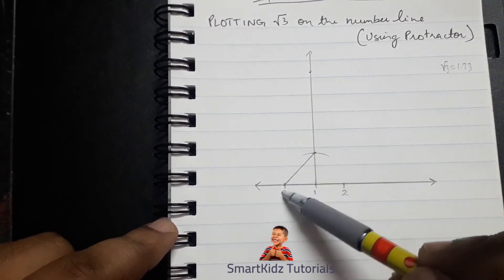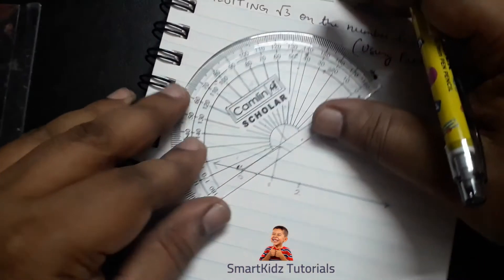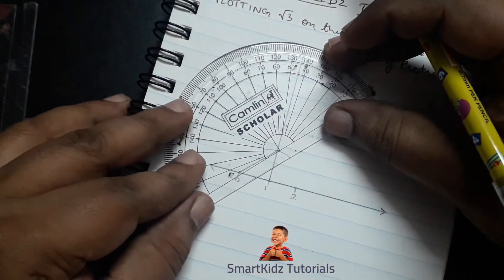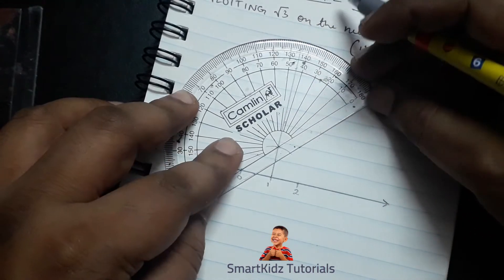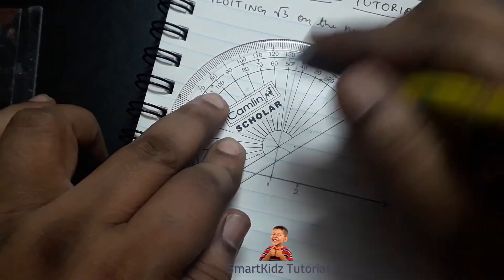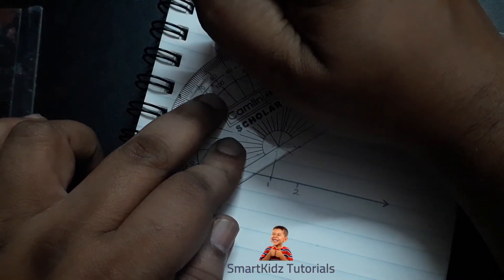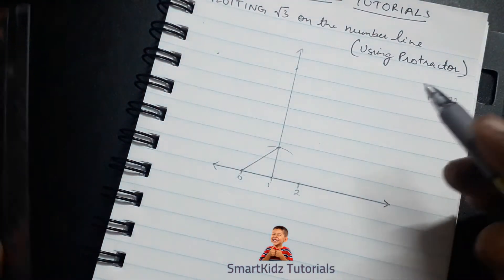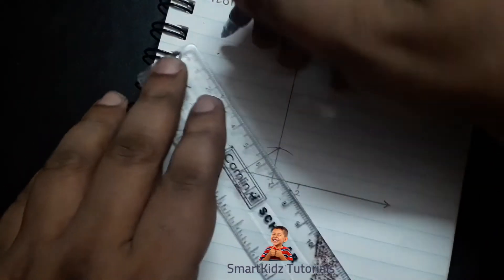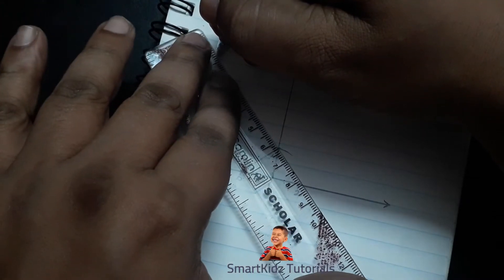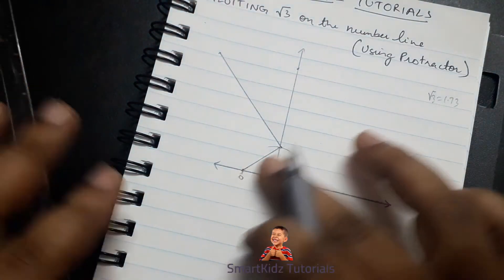This is how we do it: we keep the protractor this way, use this point, and see where our 90 degrees comes — which is somewhere over here. Let's mark this. Then we draw a line from this point joining to this point here, so that line is perpendicular to the root 2 line, and not to the base number line.